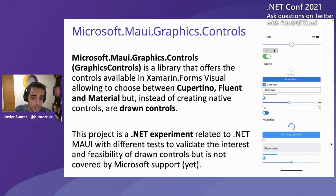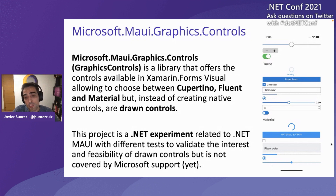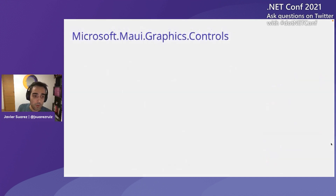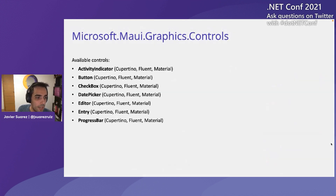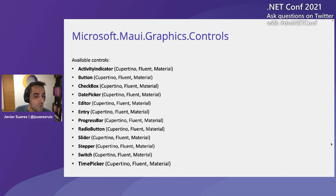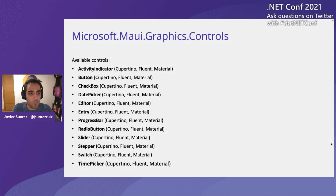For the .NET MAUI release in Q2 of next year, this will continue in the same way — it is still a .NET experiment, an experimental library. We are mostly sharing it with the community and developers, getting feedback and trying to improve it. If it becomes part of the future of .NET MAUI, that will be more with .NET 7 than with .NET 6. In .NET 6, it remains a separate experimental library.